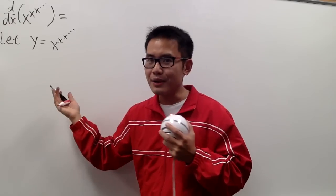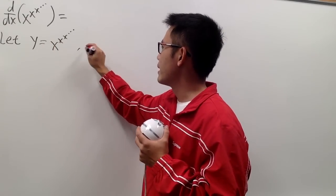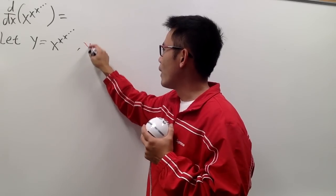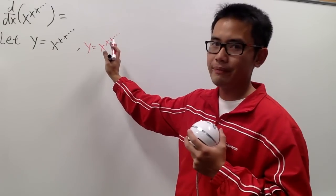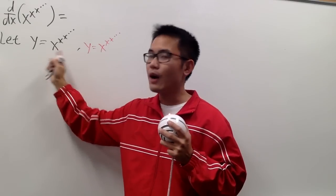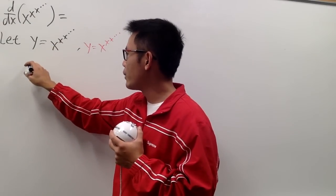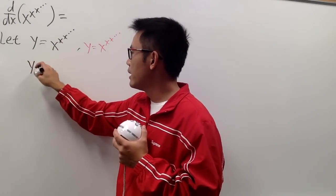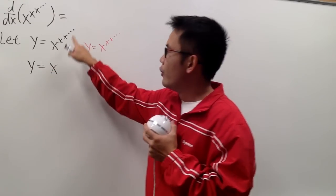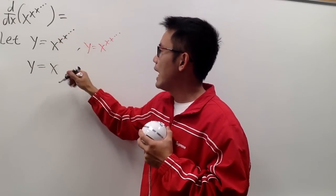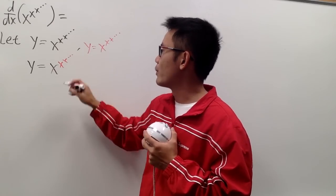I will rewrite this again, but this time in red. So we have y equal to x to the x to the x, dot dot dot, in red. And one more time — carefully — we have y equal to x, and then the rest of the x's written in red: x to the x, dot dot dot, in the power like that.